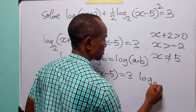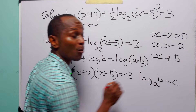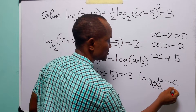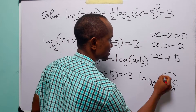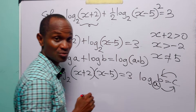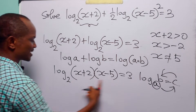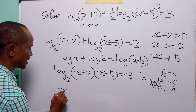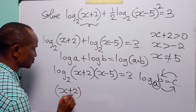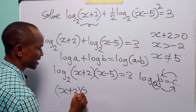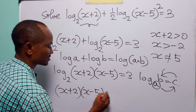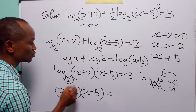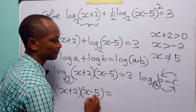When we have a statement such as log to base a of b equals c, it simply means that a to the power c equals b. So we can write this as (x plus 2) multiplied by (x minus 5) equals 2 to the power 3.